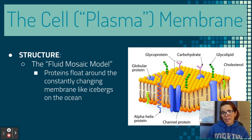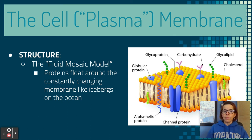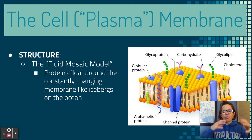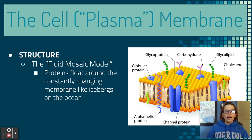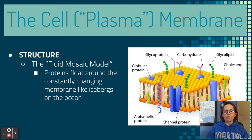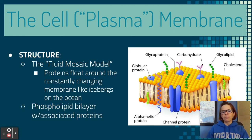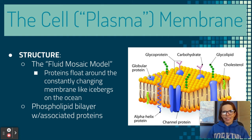Plasma membrane is the real name; cell membrane is kind of the seventh-grade version. The fluid mosaic model basically says that proteins are floating around the outside or within the membrane, kind of like icebergs moving around in the ocean. Not all proteins move — some are in fixed positions — but many float around. The structure of the plasma membrane is a phospholipid bilayer with associated proteins, which we already learned in biochemistry.